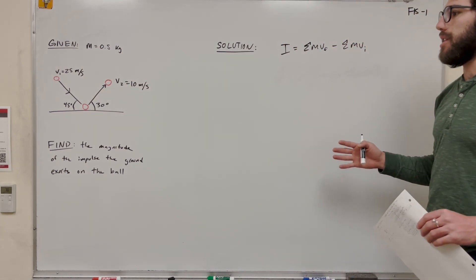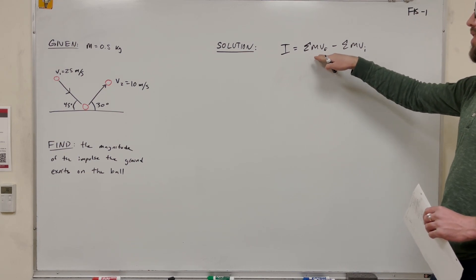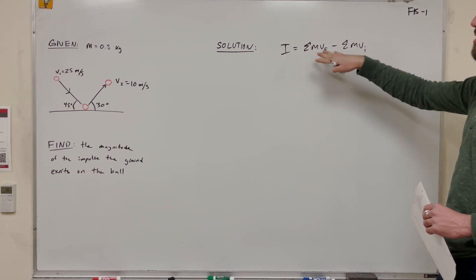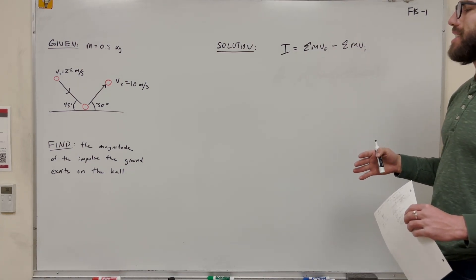To do that we're going to use this impulse equation. It's basically the change in momentum, right? You see that mass times velocity final minus mass times velocity initial - this is momentum initial, momentum final. We're looking for the change in momentum on the ball.